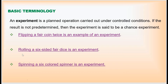Here are three examples of experiments. The first one is flipping a fair coin twice. You are flipping a coin and doing this experiment two times. We don't know what the outcome will be — you may get heads twice, tails twice, heads then tails, or tails then heads. So this is an example of an experiment.